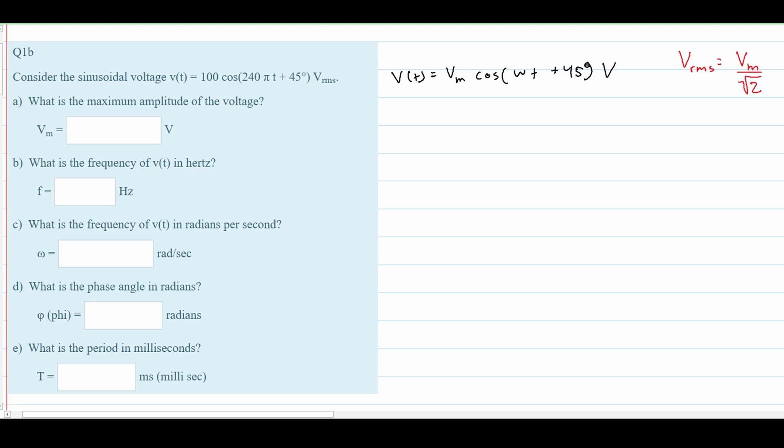Now we can use this equation to solve for Vmax. Vmax equals Vrms times √2. We know Vrms is 100, so multiplying by √2 gives us approximately 141.42 volts.